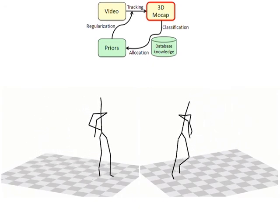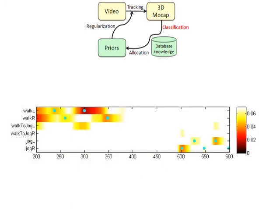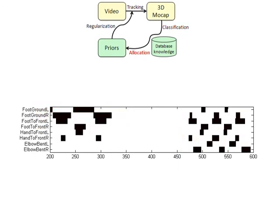Using a robust classifier based on motion templates, our framework detects the occurrences of certain motion categories. Here, darker colors indicate better similarity to the database patterns. We integrated the motion categories walking, transit from walking to jogging, and jogging. The classification result leads to an increase of knowledge about the sequence to be tracked.